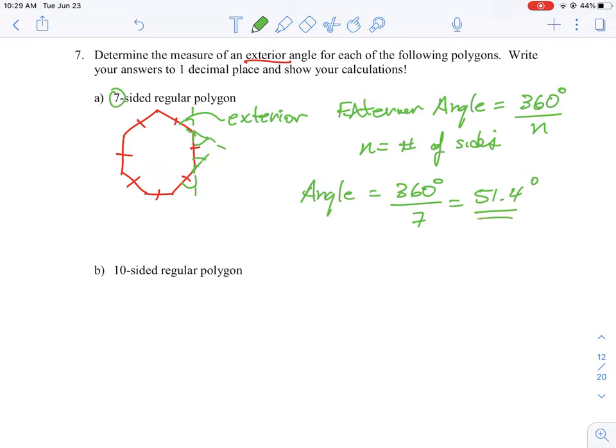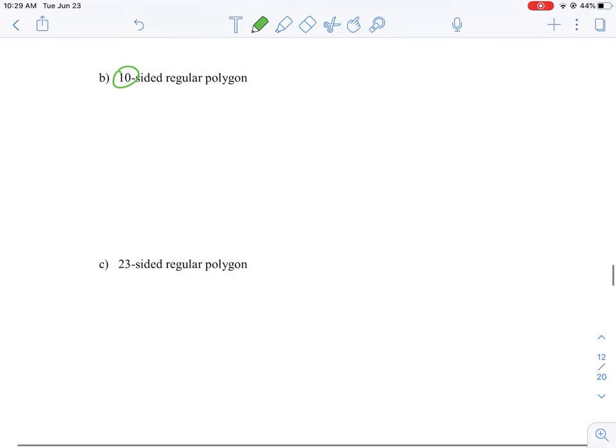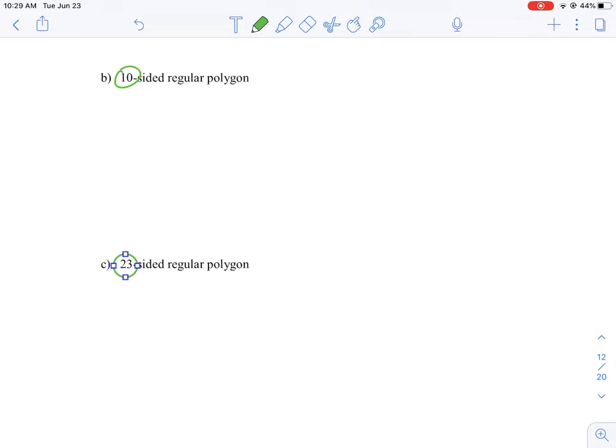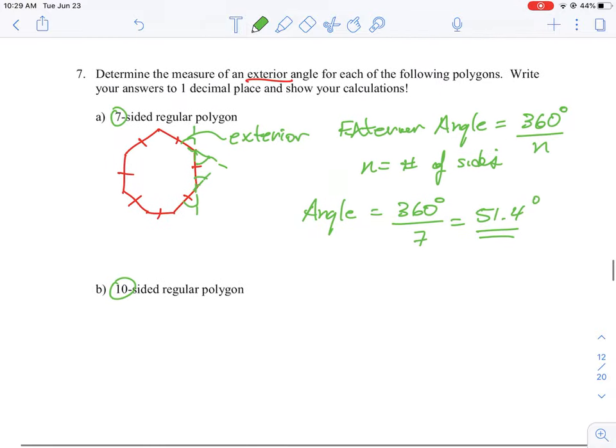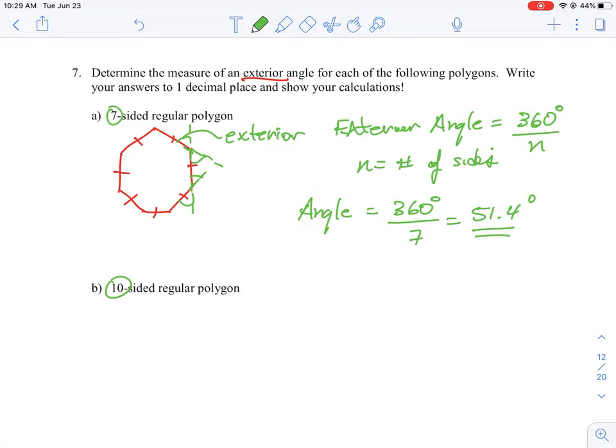And so we would just follow the same pattern if we would do a 10-sided polygon—that's a little bit harder to draw—and also a 23-sided polygon. It doesn't really make much of a difference how many sides you have; it's just going to be the value of n that you put in. Okay, so that's how you tackle this type of problem.